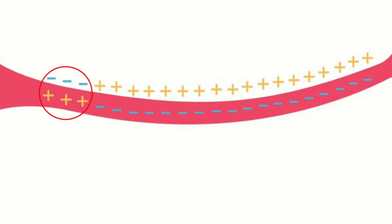When a part of the neuron is stimulated, the distribution of ions in that particular part changes. As a result, the inner surface becomes positively charged and the outer surface becomes negatively charged. This change in the distribution of charge on either side of the plasma membrane is due to the change in the distribution of ions in that particular part.